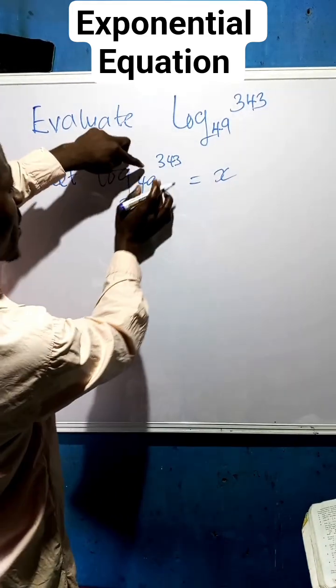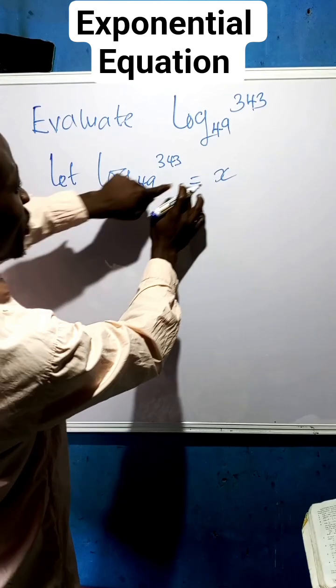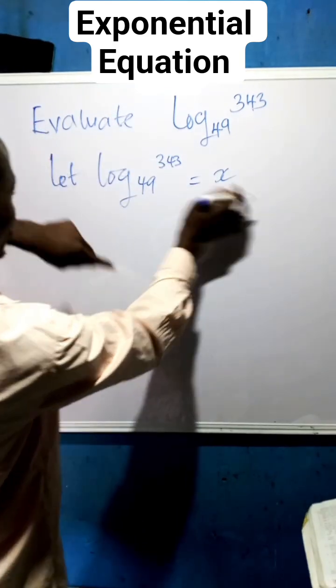Having done this, what we're going to do next is to bring this unknown number to become the power of this 49 and to be equal to 343. So that you now have 49 raised to the power of x equals 343.